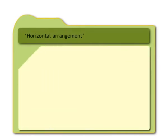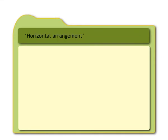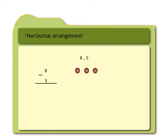In horizontal arrangement, nine minus one equals eight is written as shown. In vertical arrangement it is written as shown. If we are given two numbers, let's subtract them in vertical arrangement and then write in horizontal arrangement. Nine minus six: write in vertical arrangement, draw nine dots — three dots remain, hence nine minus six equals three. Write in horizontal arrangement as shown. Eight minus five: see the vertical arrangement, draw eight dots, score out five dots — three dots remain, hence eight minus five equals three. Write in horizontal arrangement as shown.